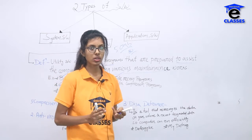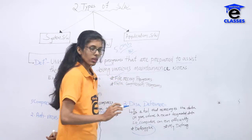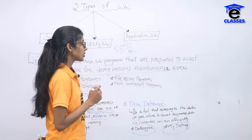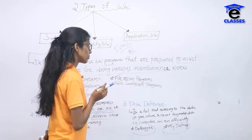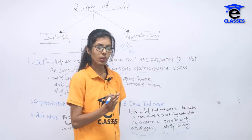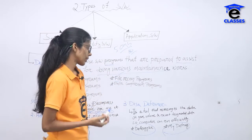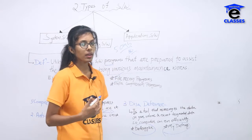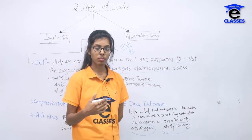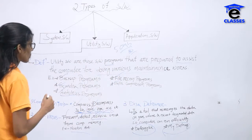Generally we use two defraggers — one is the built-in Windows defragger and the other is the free tool called MyDefrag. Using disk defragmenter, we arrange the data and reunite the fragmented units so the computer can run efficiently and we can work freely.